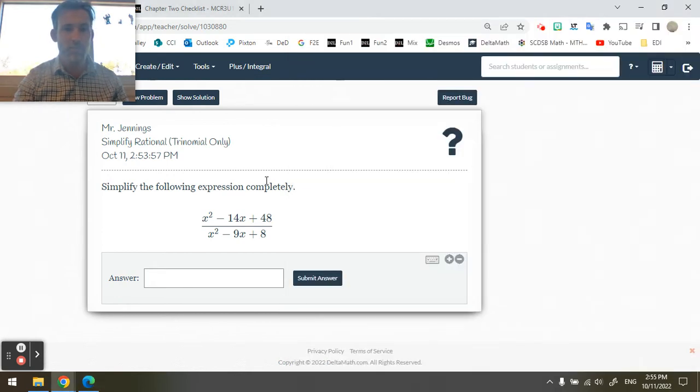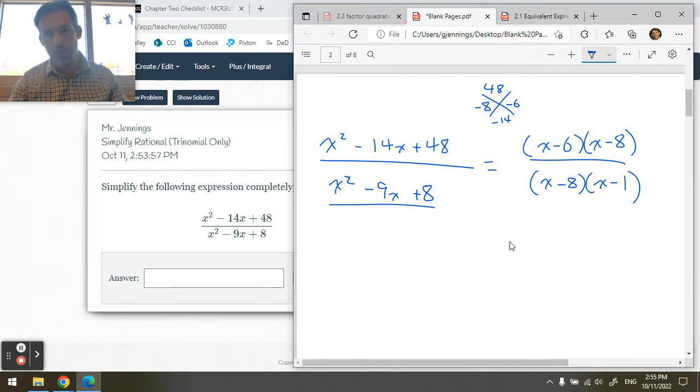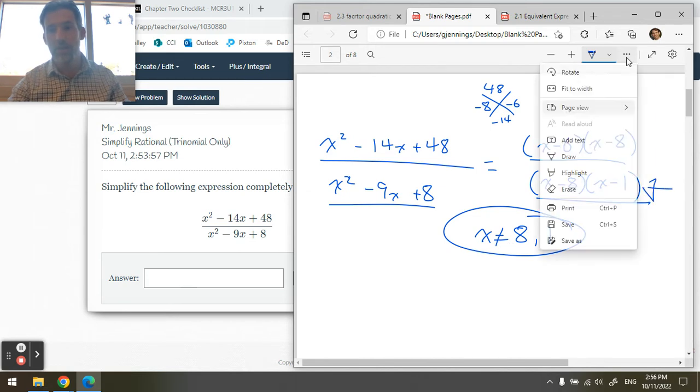These problem types just ask us to simplify the problem completely and not state restrictions. But if this was on the test, you want to tell me that x is not equal to 8 and x is not equal to 1 either. Because that would create a 0 on the bottom of this fraction.